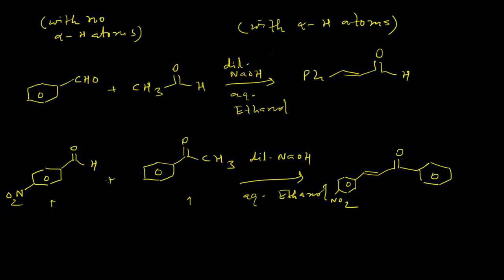Now we have to carefully notice whether these two reactions are actually maintaining the conditions for the Claisen-Schmidt reaction. In the first reaction, this benzaldehyde molecule does not possess any alpha hydrogen atoms, and in the case of acetaldehyde, we can clearly see that three alpha hydrogen atoms are there.